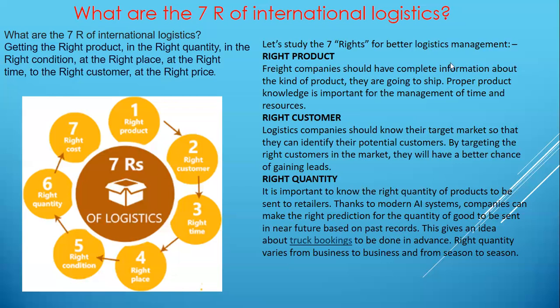Without these seven rights, international logistics cannot be performed functionally. The seven rights of international logistics are: getting the right product, in the right quality, in the right conditions, at the right place, at the right time, to the right customer, and at the right price. Let's study these seven rights of logistics management.